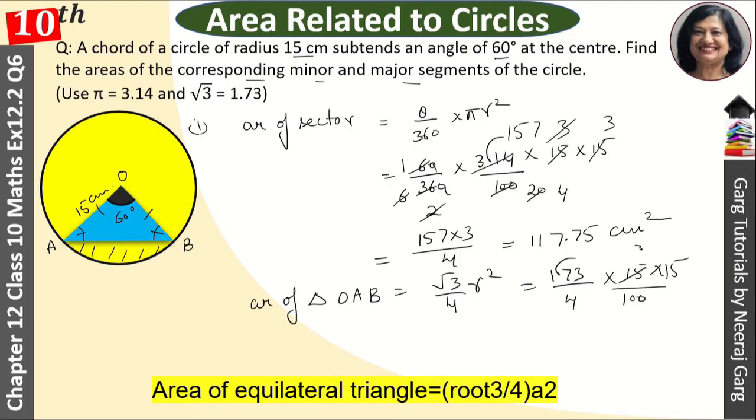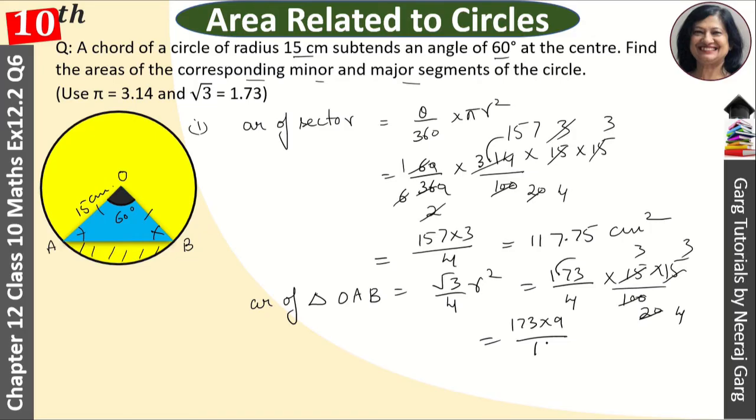Then this is 3, and this is 20, then 3, and this is 4. And this will come here. When we make 173 into 9, 173 into 9 divided by 16, our answer will be 97.3125 cm squared.